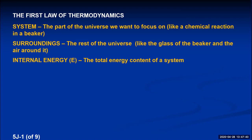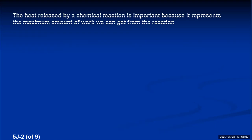We've learned how to experimentally determine how much heat is given off or absorbed in a chemical reaction — that would be done with a calorimeter. We've also determined how to predict the amount of heat given off or absorbed theoretically, using bond energies, Hess's law, and standard heats of formation. The heat released by a chemical reaction represents the maximum amount of work we can get from that reaction. The energy a system gains or loses is abbreviated delta E.